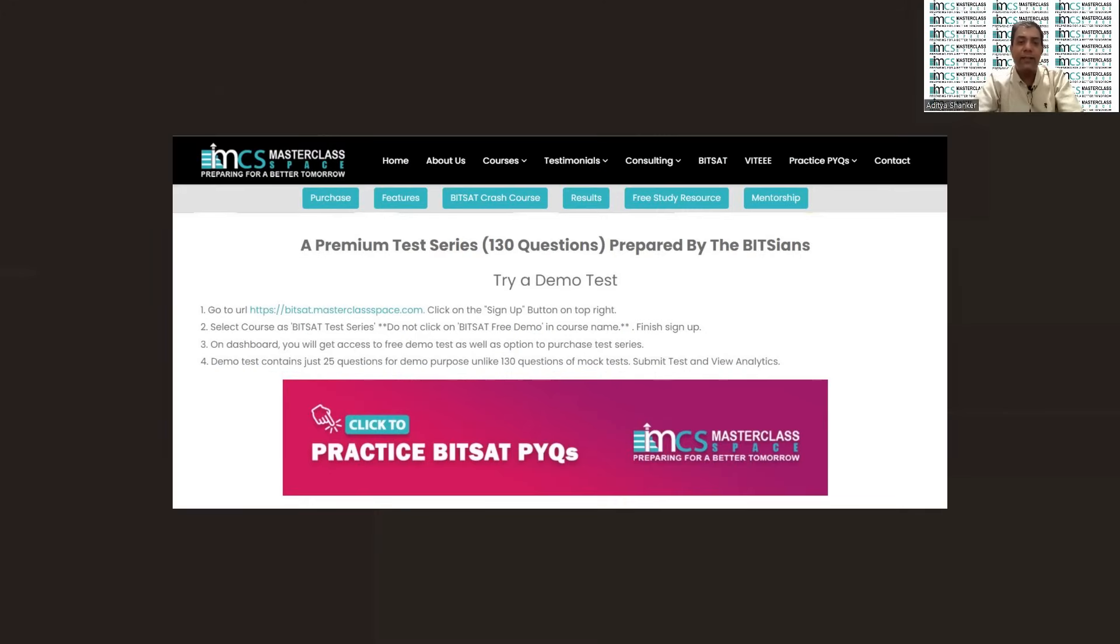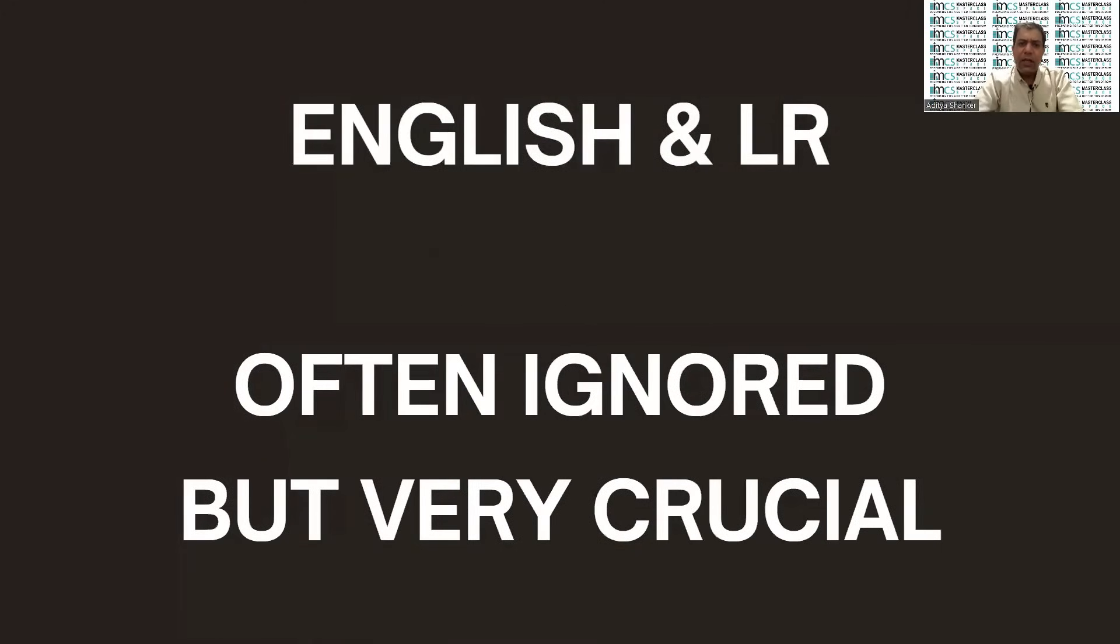English and logical reasoning, if we want to talk about apart from PCM, they are generally ignored in our grade one and grade two and of course in your JEE coachings and JEE preparation. English and logical reasoning is not taught, but they are very very crucial. The reason is that now you get 30 questions of English and logical reasoning, so 30 questions means 90 marks are covered by English and logical reasoning which can give a big boost to your score and change your BITSAT score widely.